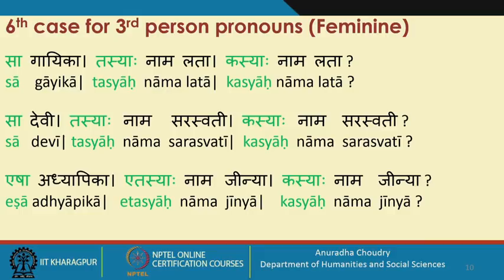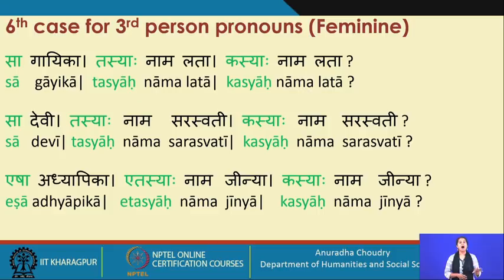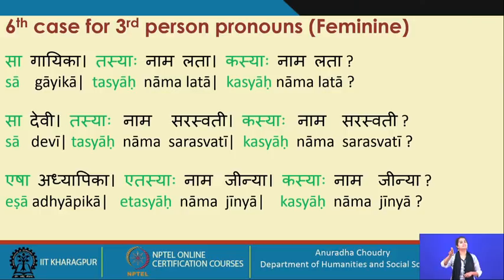Since we have looked at the masculine forms, let's now look at the feminine. There are two kinds of endings: those with aa and those with e. Let's first look at the pronouns. Saa gaika — tasyaah naam Lata; the question is kasyaah naam Lata, and the answer is tasyaah naam Lata.